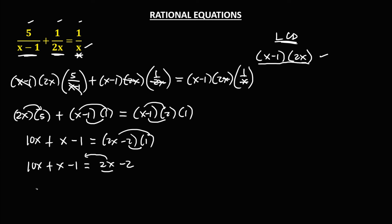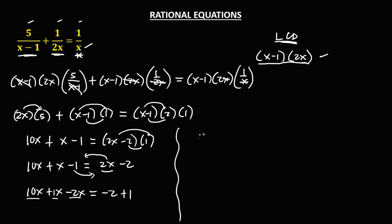So this becomes 10x plus x minus 2x, then equals negative 2x minus 2x, then equals negative 2 plus 1, that's negative 1. And to solve for x, divide both sides by positive 9, so x equals negative 1 over 9.